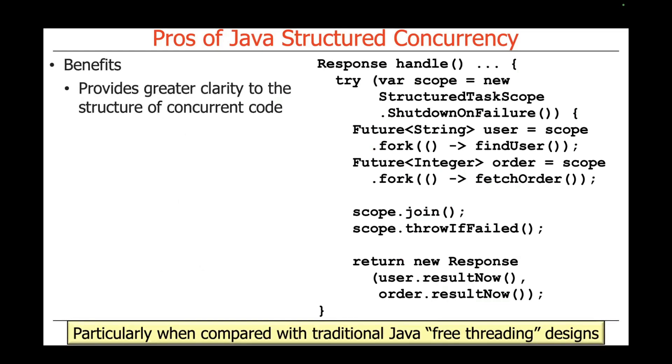One of the nice things of Java Structured Concurrency, particularly the features having to do with the structured task scope, is it provides greater clarity about the structure of concurrent code, which is exactly its purpose. This is particularly true when we compare it to traditional Java free-threading designs where you can just spawn threads willy-nilly any old time you want, and they don't have to have any parent-child relationships or sibling relationships to each other.